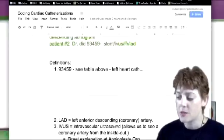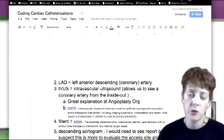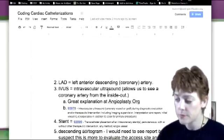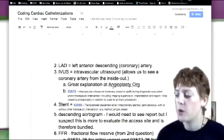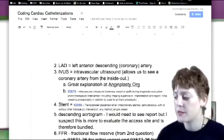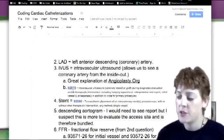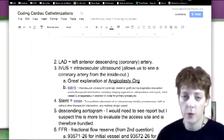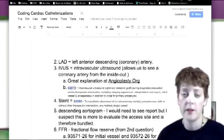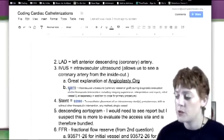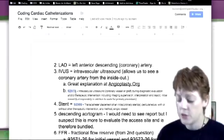Then an IVUS was done. That's intravascular ultrasound which basically is allowing you to look at a vessel from the inside out. It's kind of cool. And there is a great site, angioplasty.org if you want to go read about that. It's very good reading. And so the code for that is 92978. This is the coronary one. Now there's one in the 30000 series but that's for non-coronary IVUS. So that would be the code for that. So, so far we have the 93459 and the 92978.